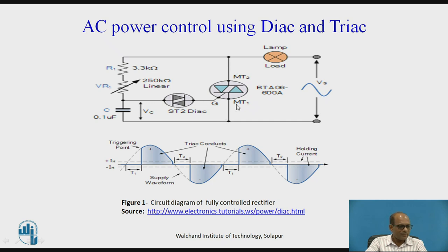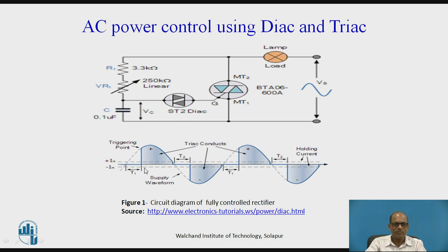When TRIAC is conducting, the voltage drop across the conducting TRIAC is about 1 volt, which is very small compared to the input of 230 volts. Therefore, this 1 volt is neglected in comparison with the input while drawing the waveform. During period T1, the TRIAC is in OFF state, so current flowing through the TRIAC is leakage current and voltage across the load is 0. After T1, at this point the DIAC becomes ON and triggers the TRIAC, so TRIAC becomes ON. When TRIAC becomes ON, voltage across the load is equal to part of the input voltage.